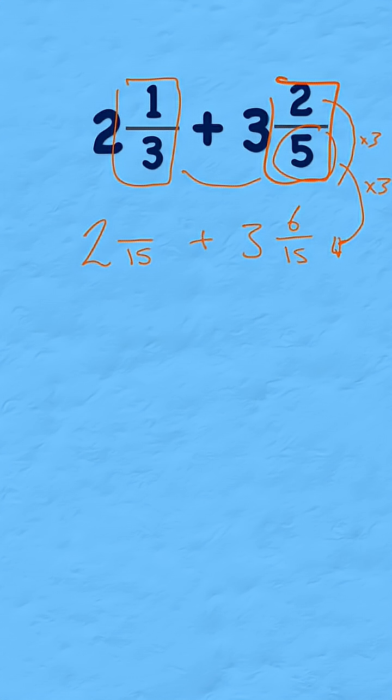And on the first one, how did I get from 3 to 15? I had to multiply by 5. So now I have to get my 1 and also multiply it by 5 to keep the fraction equivalent. 1 times 5 is 5.